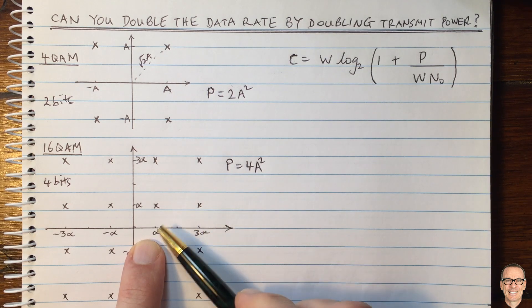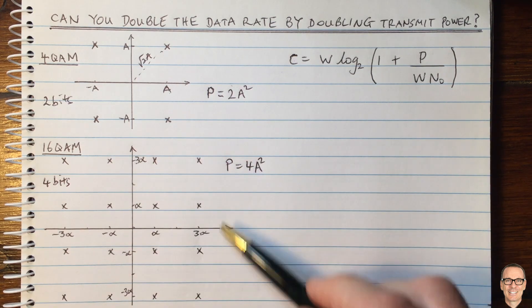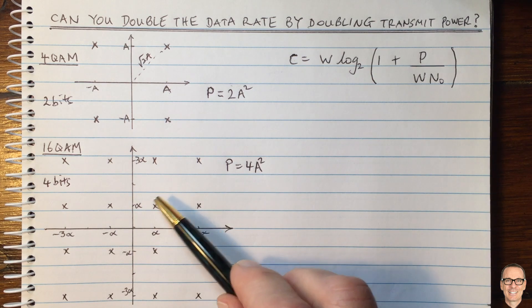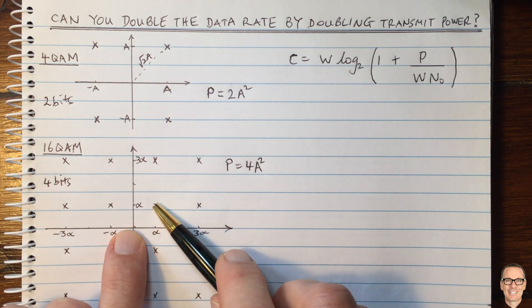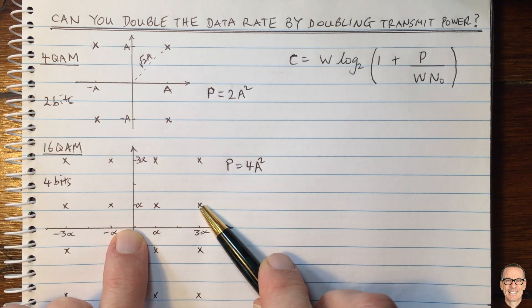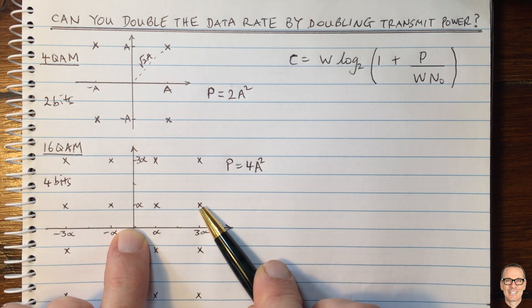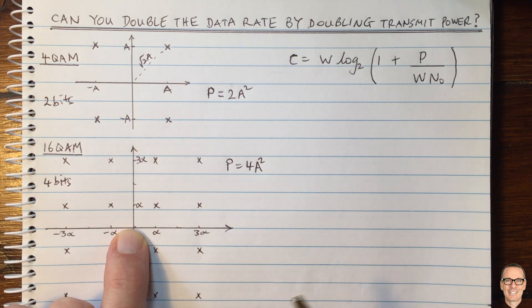Well we do that by finding the power on average across the constellation points. And it's symmetric in the four quadrants, so we can work out the power in each of these four here, add them up, and then divide by four, and we'll find the average power.